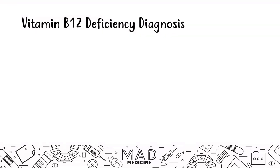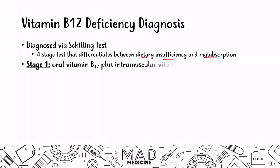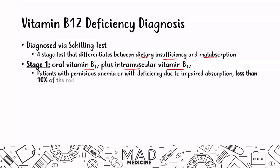When it comes to diagnosing these patients, you use the Schilling's test. This is a four-stage test that differentiates between different causes of vitamin B12 deficiency — whether it's dietary insufficiency, malabsorption, or even an infection. In stage one, you give the patient oral vitamin B12 plus intramuscular vitamin B12. Patients with pernicious anemia or an absorption deficiency will have less than 10% of the radio-labeled vitamin B12 detected in their urine.